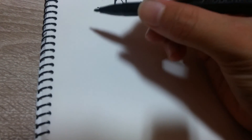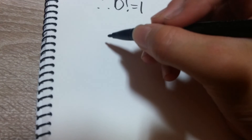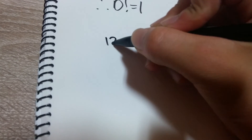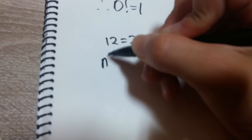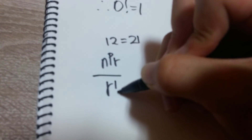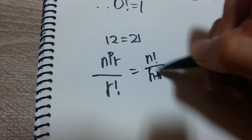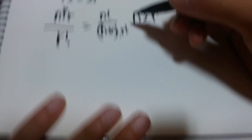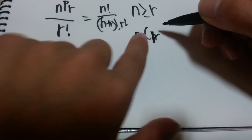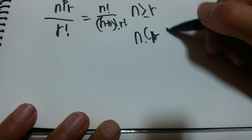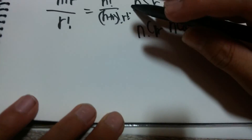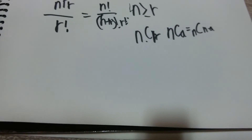Now let's talk about combinations. Combinations are the same idea — you pick R objects — but you don't count the order. So 1,2 is the same as 2,1. The combination formula, written as nCr, is nPr divided by R factorial, which equals N! / (R! × (N-R)!). Also, nCa equals nC(N-a), which follows from this formula.